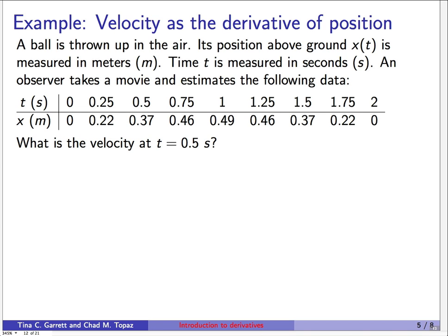Here's another important application: velocity is the derivative of position. Imagine we have a ball thrown up in the air, and its position above ground is given by some function x of t, where x is measured in meters and time in seconds. An observer takes a movie and writes down a table of data. We'd like to ask: what is the velocity of the ball at time equals 0.5 seconds? We'll change the input variable a little bit around that value and ask what's the corresponding change in the output.